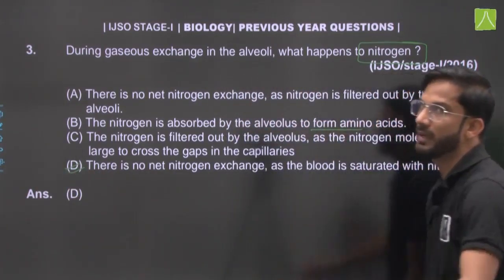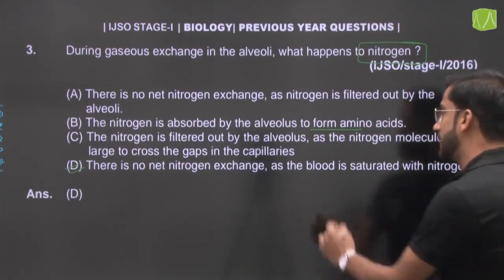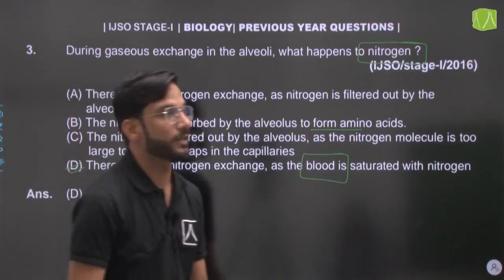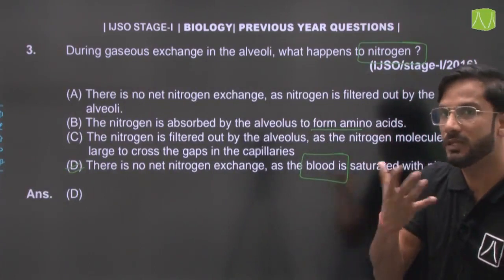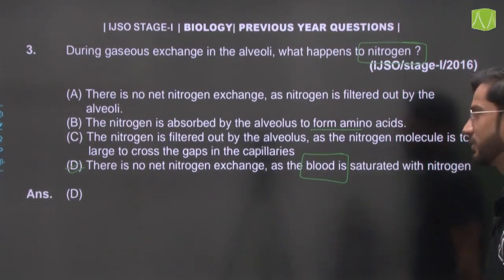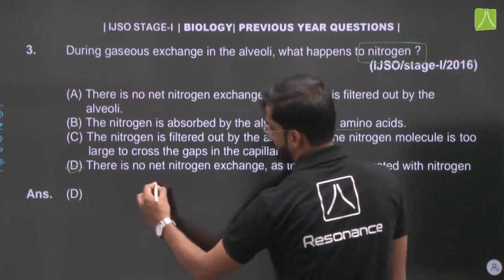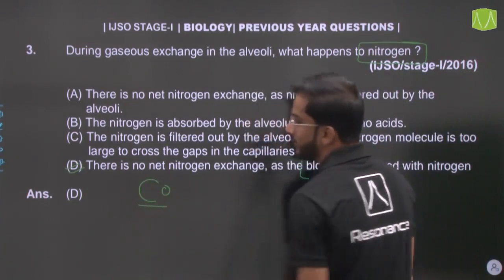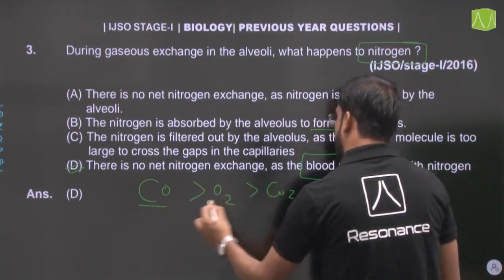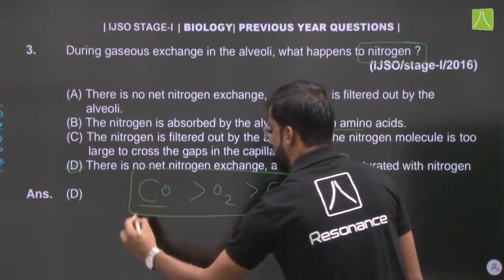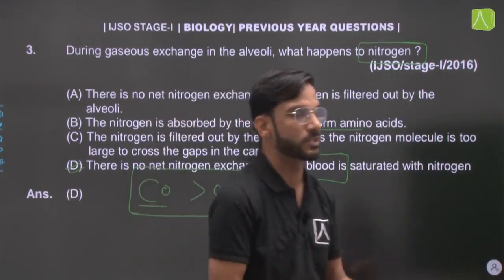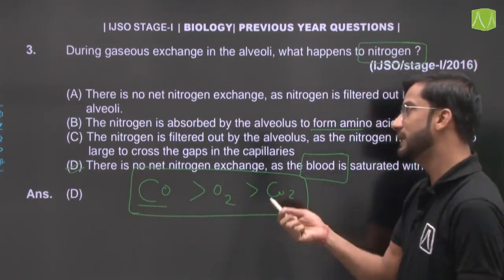There is no nitrogen exchange happening because blood has no combining capacity with nitrogen. So what happens is nitrogen, as it is, goes in during inhalation, reaches our alveoli, and is then released back into the atmosphere through exhalation. Because blood's binding capacity is for oxygen and CO2, not nitrogen — therefore no changes happen with nitrogen. That's why Option D is correct.